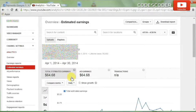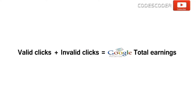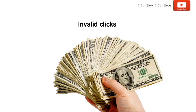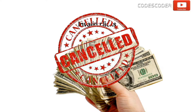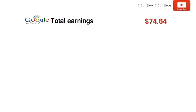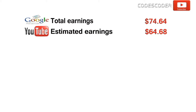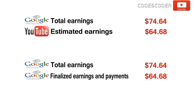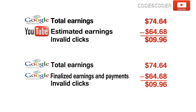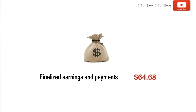I am going to tell you the actual reason. Google AdSense calculates total earnings that includes both valid clicks and invalid clicks. Invalid clicks may artificially increase advertiser cost, so Google does not consider invalid clicks. The difference between total earnings and total estimated earnings, and between total earnings and finalized earnings and payments, is $9.96. This $9.96 is generated due to invalid clicks — that's why Google does not consider that amount, and finally we get our YouTube earnings in the form of finalized earnings and payments.